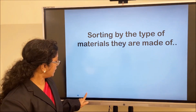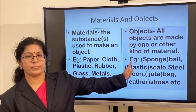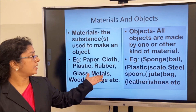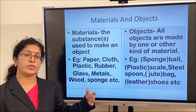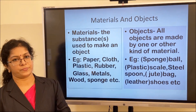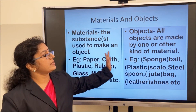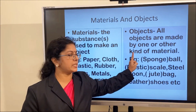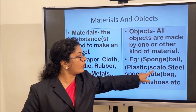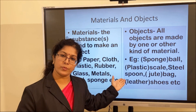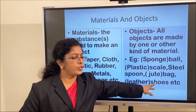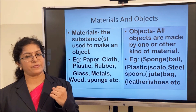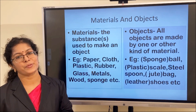We are introduced to materials and objects. Examples of materials include paper, plastic, rubber, glass, metals, wool, sponge, and thermocol. These materials are used to make objects: a sponge ball — ball is the object, sponge is the material; a plastic or steel scale — scale is the object; a steel spoon — spoon is the object, steel is the material. Find as many objects as you can around you and find out which material is used to make them.